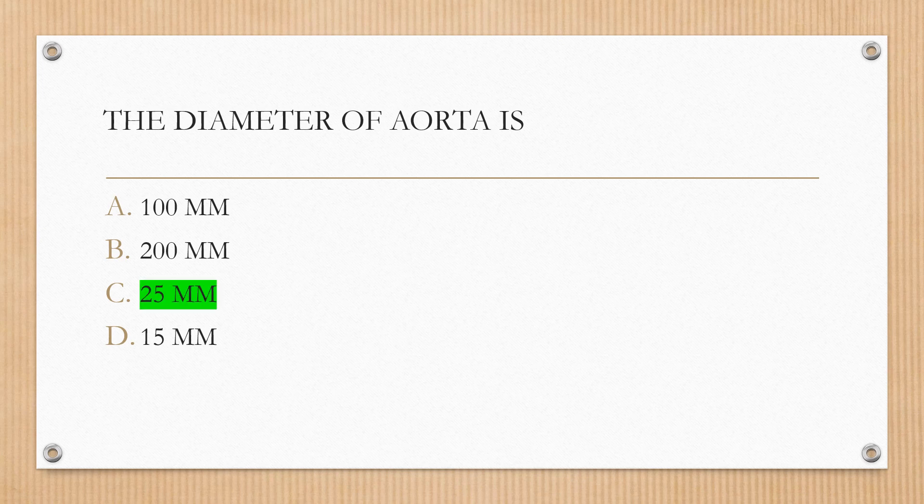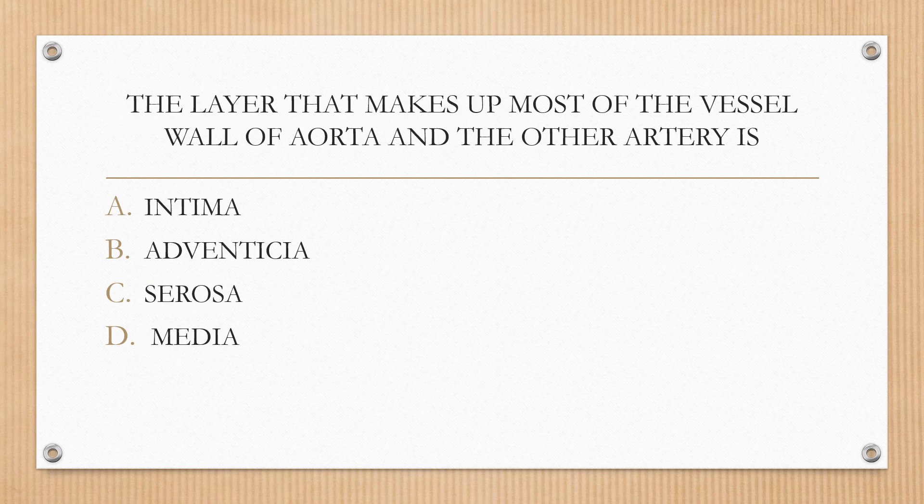Next question. The layer that makes up most of the vessel wall of the aorta and other arteries is: option A intima, option B adventitia, option C tunica, option D media. The correct answer is option D, media.